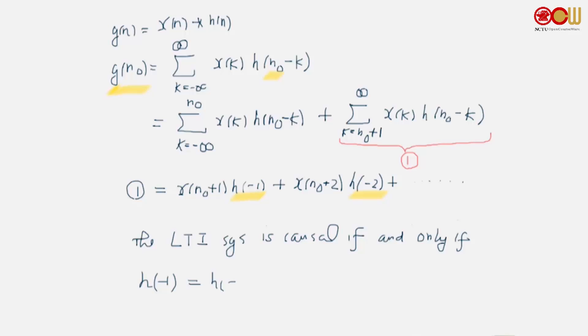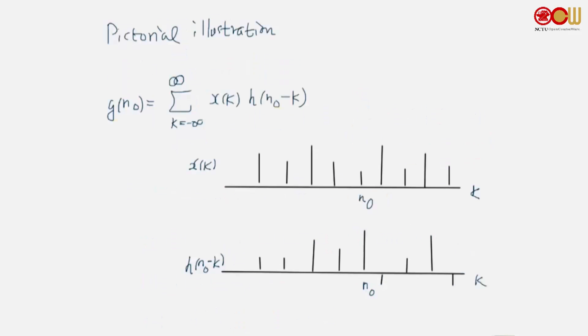We can also look at what we have just derived pictorially. First, y(n0) is computed this way. This is a function of k, and this is also a function of k. We multiply these two functions of k together and then sum it up. So for example, this is x(k), and this is h(n0-k). To obtain h(n0-k), we first flip it and then shift it so that the h(0) sample will come to n0.